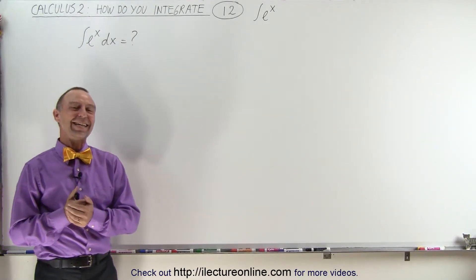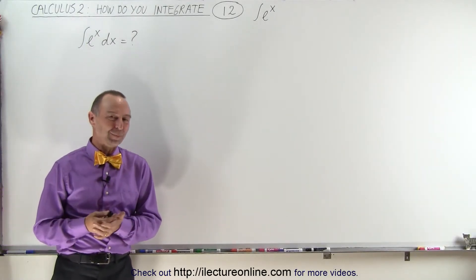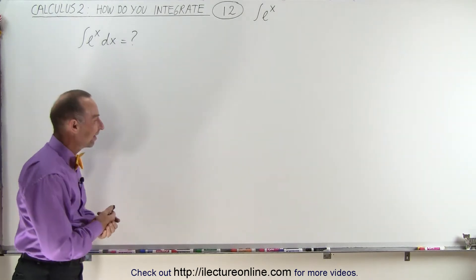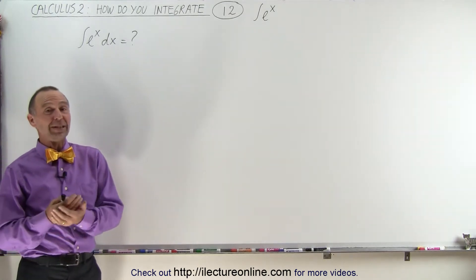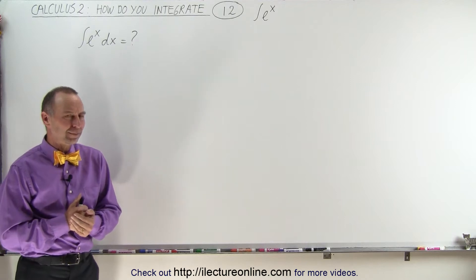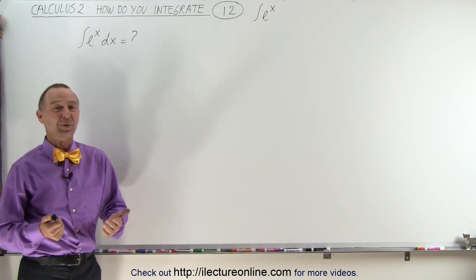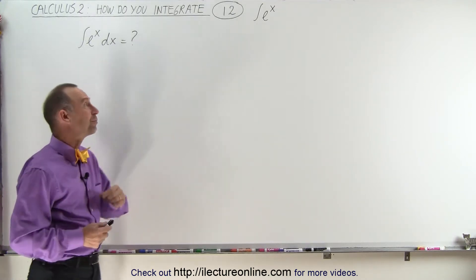Welcome to ElectronLine. Here we have an interesting integral, the integral of e to the x. Most of us know that the integral of e to the x is indeed e to the x. But how do we know? We just memorized it, but do we have proof of that?